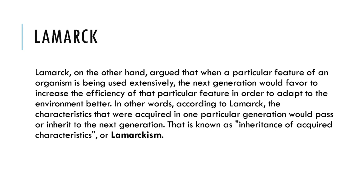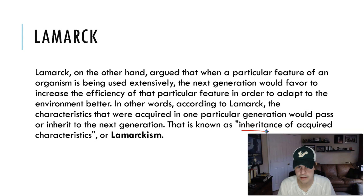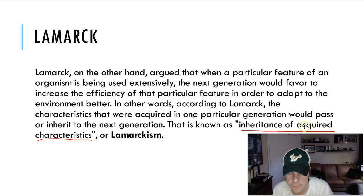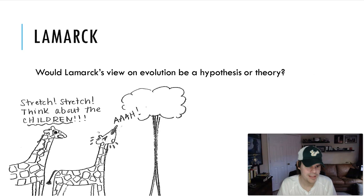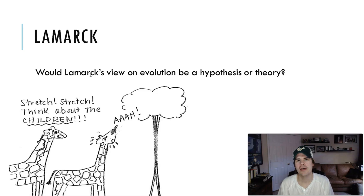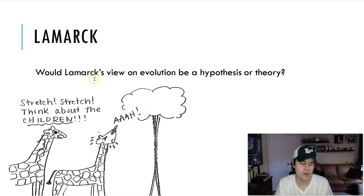Lamarck's idea is called the inheritance of acquired characteristics. 'Acquired' means you get it throughout your lifetime — like acquiring a new car — you acquire characteristics and then your offspring are given them. Would Lamarck's view on evolution be a hypothesis or a theory? Theories are backed by lots of scientific evidence. Lamarck's view would be a hypothesis — a creative one — but of course we know it not to be true today.